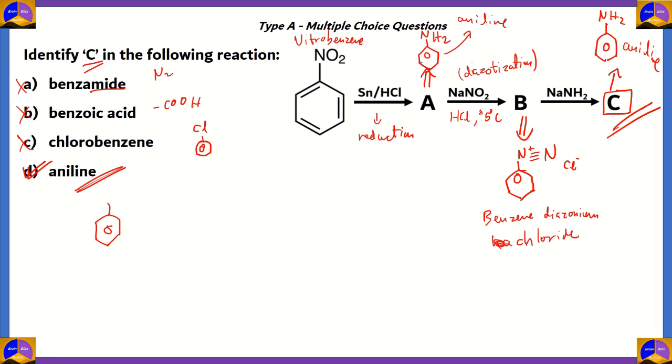So, the idea is to solve each equation by itself and using the product of the first equation, use that as the reactant for the second equation and so on until we reach the required product, which in this case is C, which we found out to be aniline. So, option D, again, turns out to be the right option.